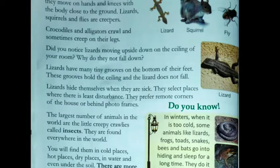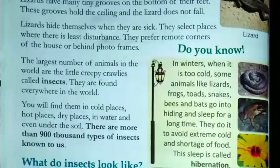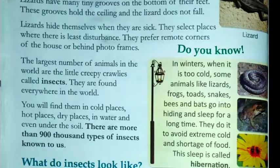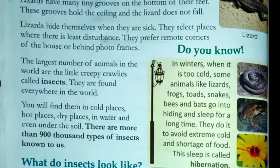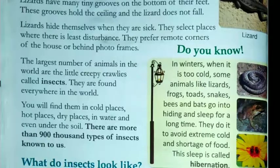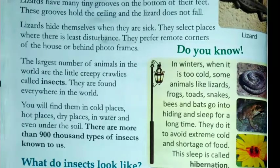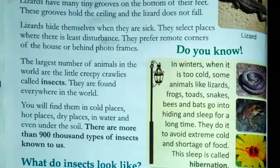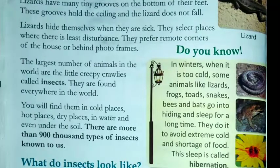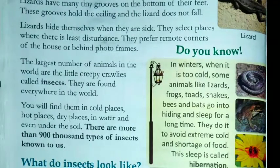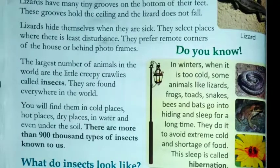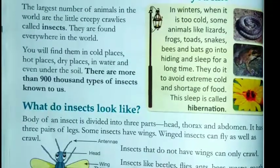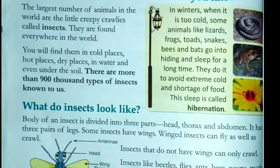The largest number of animals in the world are the little creepy crawlies called insects. Yaani ki jo large number of animals aapko world mein dikhai dete hain woh hote hai insects, aur ye aapko har jagah paaye jaate hai — cold places, hot places, dry places, paani mein, aur even mitti ke andar bhi. Kum se kum there are more than 900,000 types ke insects hote hai poore world mein.